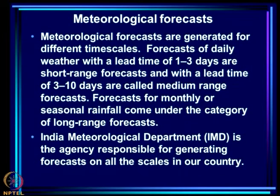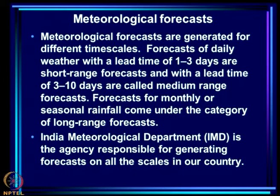What are meteorological forecasts? Forecasts are generated for different time scales. Forecasts of daily weather with a lead time of 1 to 3 days are called short-range forecasts; with a lead time of 3 to 10 days, they are called medium-range forecasts. Forecasts for monthly or seasonal rainfall come under long-range forecasts. India Meteorological Department, IMD, is the agency responsible for generating forecasts on all these time scales. There is also the National Center for Medium Range Weather Forecasting, which does a lot of research on models for medium-range forecasts.